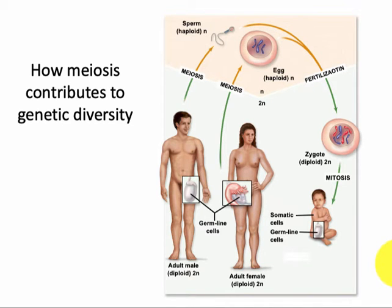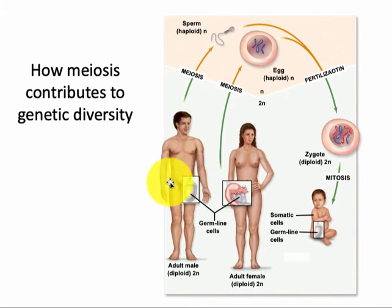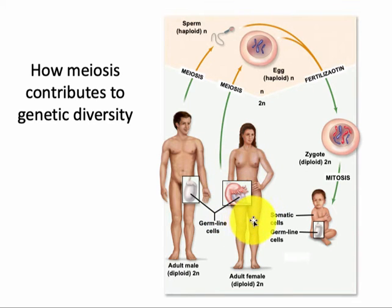Keep in mind that meiosis is happening in the parents independently. Students tend to think that meiosis is the reason why they are a mix of mom and dad — but meiosis is not the reason why we are a mix of mom and dad. Meiosis is the reason why, from our mom, we got a mix of her mom's and her dad's genes, and from our dad we got a mix of his mom's and his dad's genes. Meiosis is happening in the gonads of each parent separately — in the testes of the father and in the ovaries of the mother — and this is happening well before they even thought about having children.